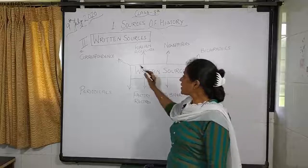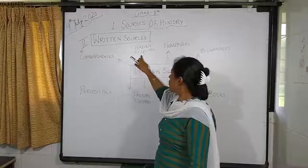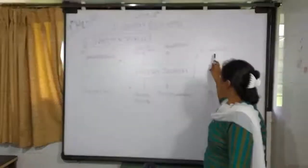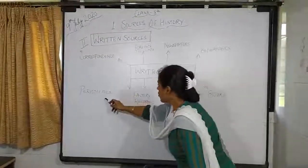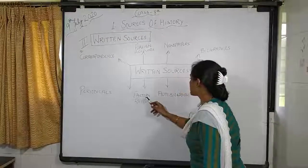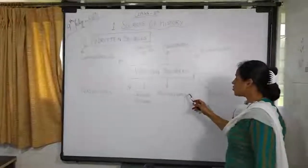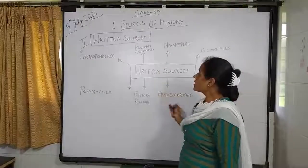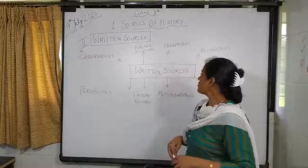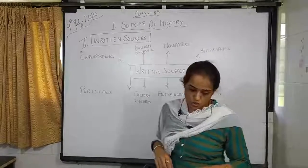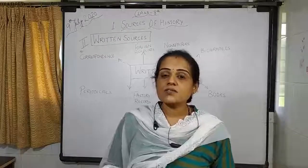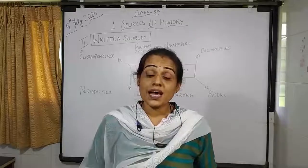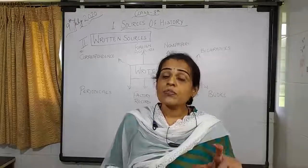The aspects of written sources include: correspondence, foreign accounts, newspapers, biographies, periodicals, factory records, autobiographies, and books. The first topic given in your textbook is newspapers and periodicals.